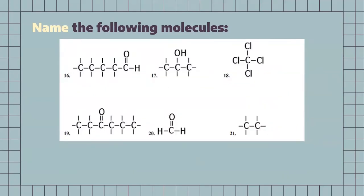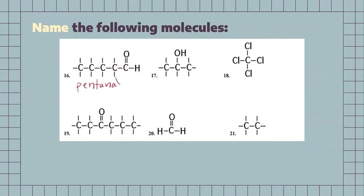For our next one, looking at how many carbons we have: 1, 2, 3, 4, 5. So, it's going to be a type of pentane. Because we have our double bonded oxygen and hydrogen, we know that's going to be an aldehyde. So, that's just going to be pentanal.